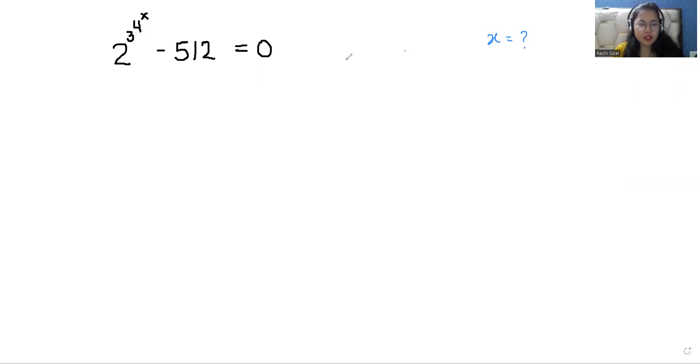So let's start with today's video and check the solution. I can write this expression as 2^(3^(4^x)) = 512. Now comes to 512.